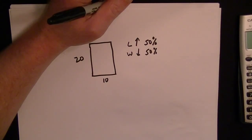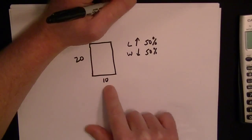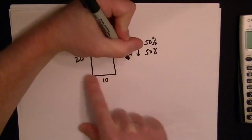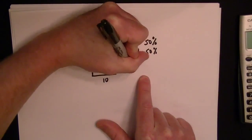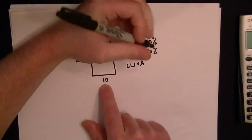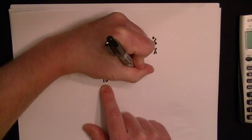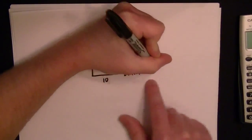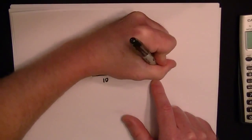The quick way to do this is to start with the initial area. The initial area is length times width equals area, so 20 times 10. We know the initial area is going to be 200.